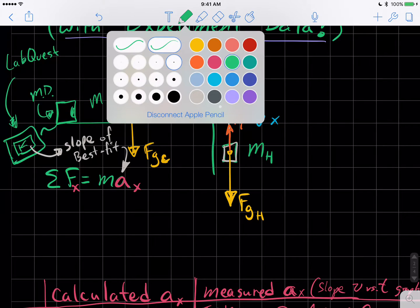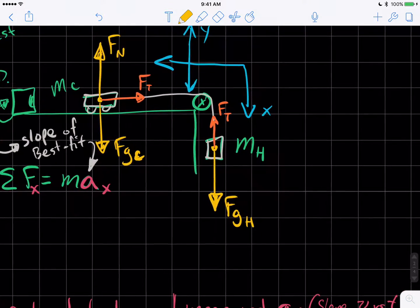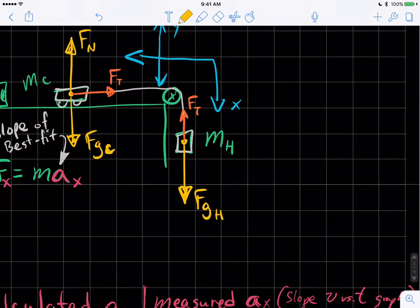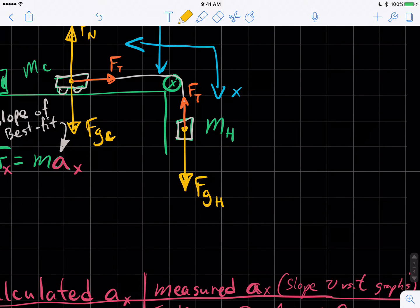We're going to need to know, okay, what's the force accelerating this system? It is just FGH. The weight of the hanging mass is what's making this whole thing accelerate. Now to calculate weight, you're going to multiply the mass, MH, times the acceleration of gravity on our planet.